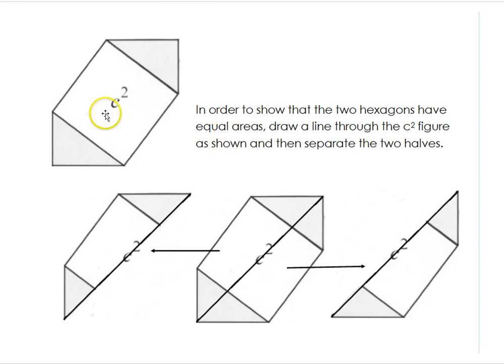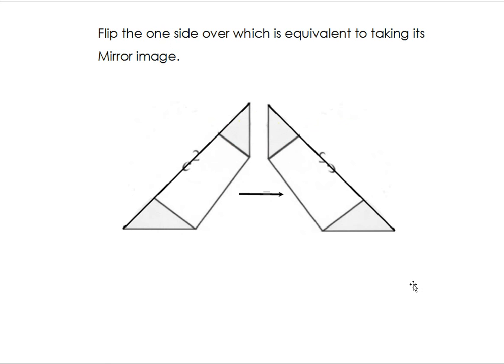So let's take the c² hexagon and draw a diagonal and cut it in half. And these are the two halves. We can flip one of them over and we can show that those two halves are actually identical.